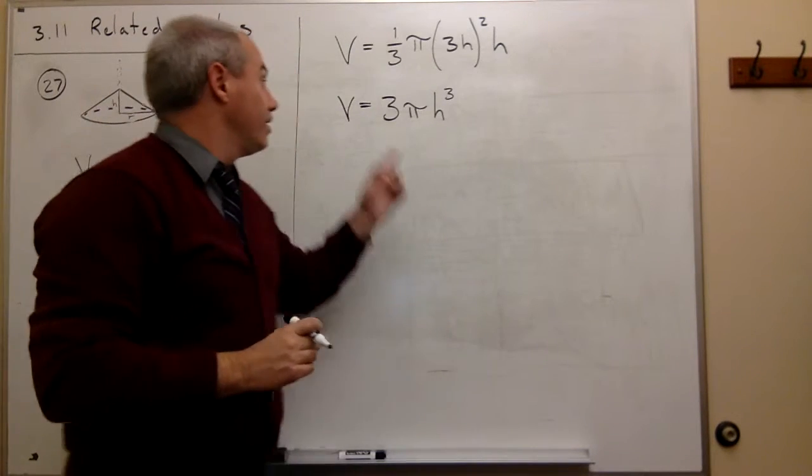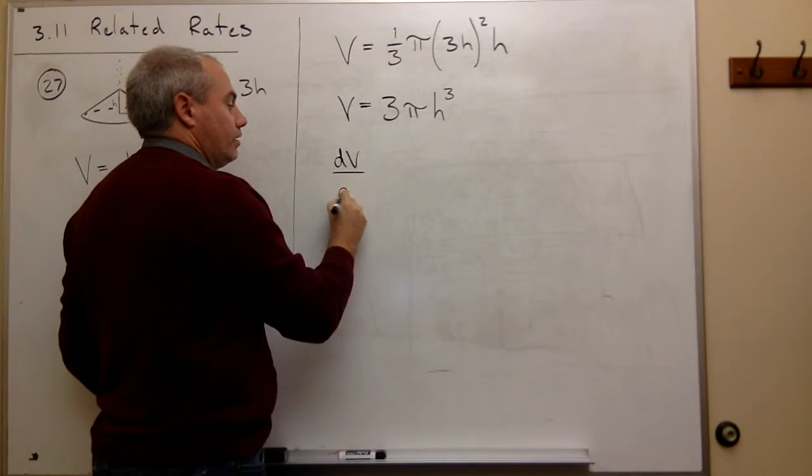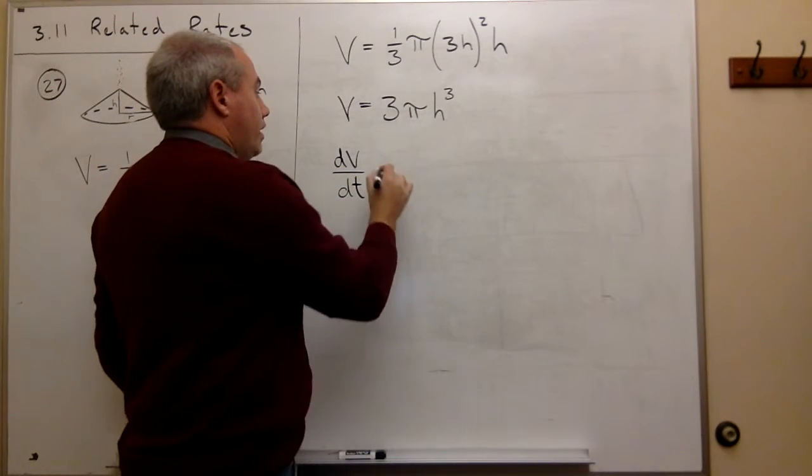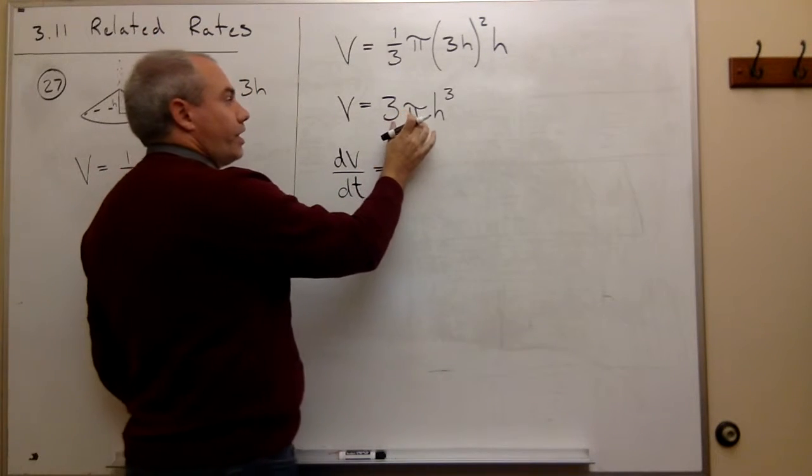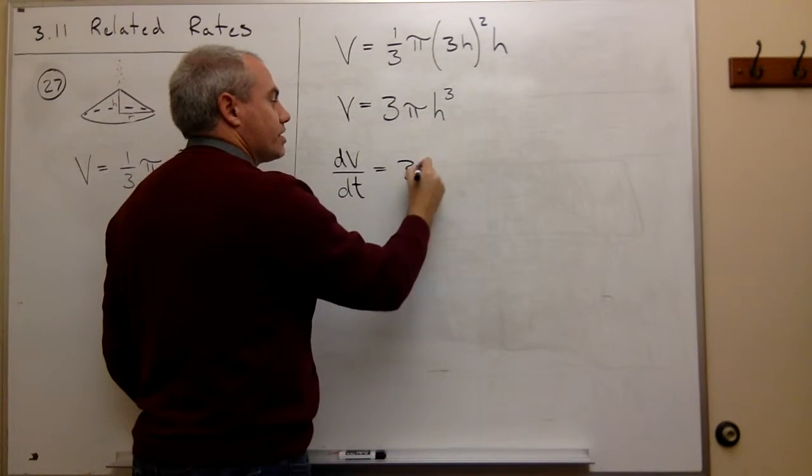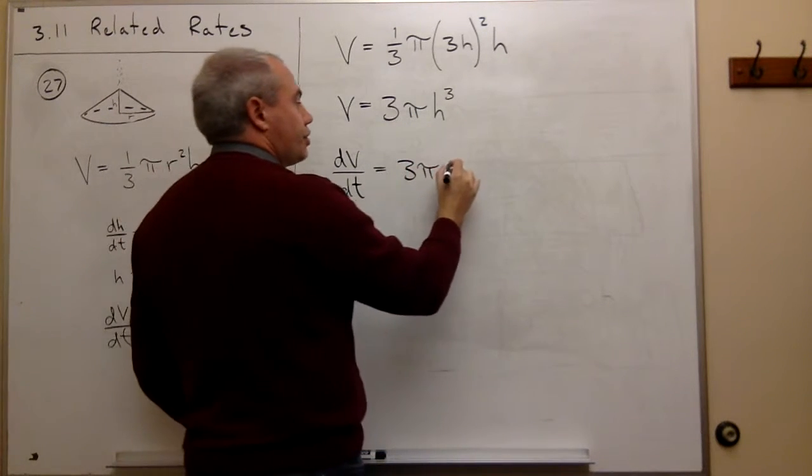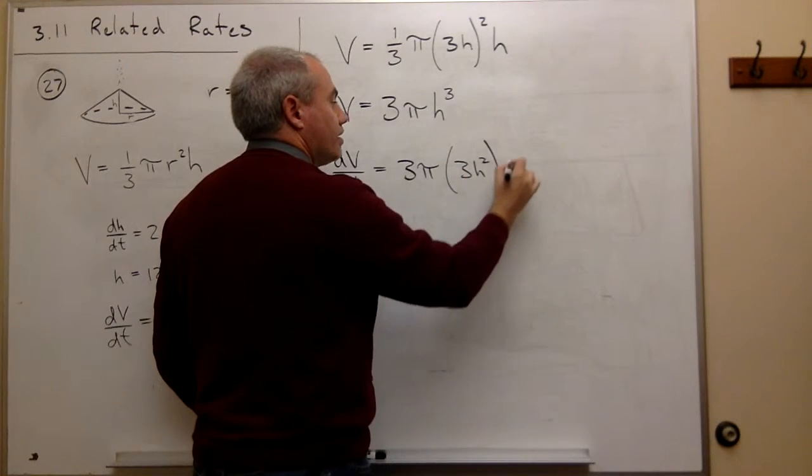with respect to time. The derivative of v is dV/dt, and on the other side the derivative of three pi h cubed, well the three pi is a constant so it just stays around, and the h cubed's derivative is three h squared times dh/dt.